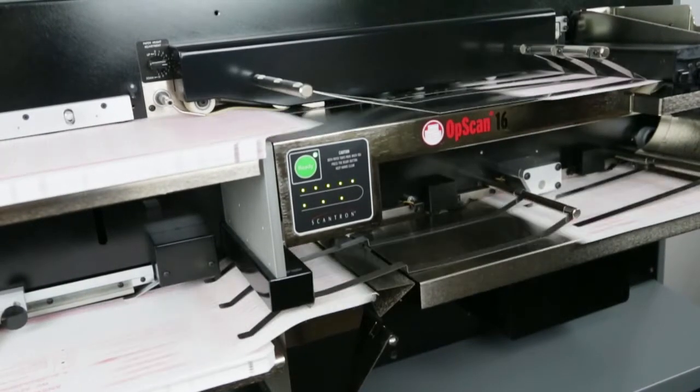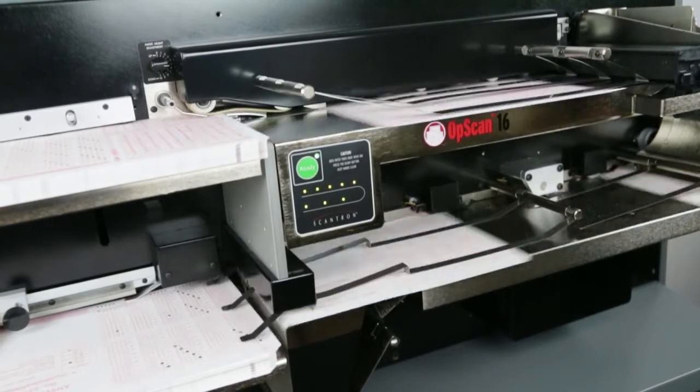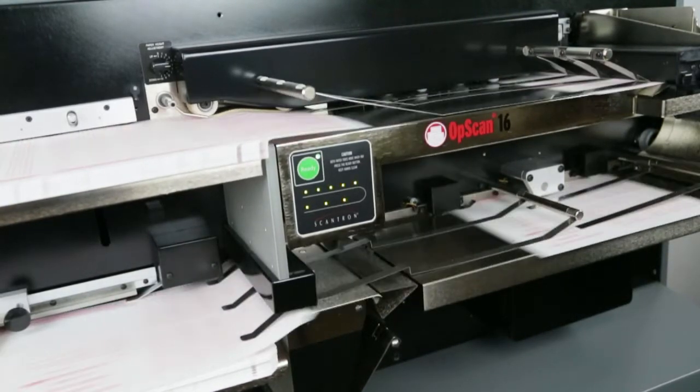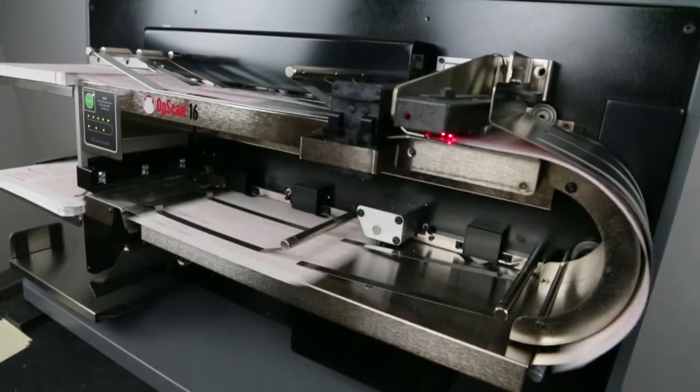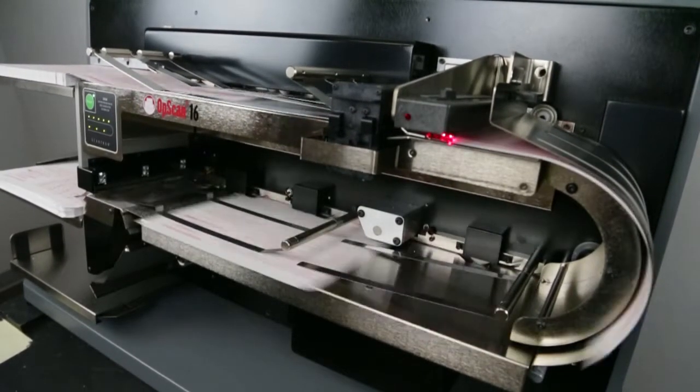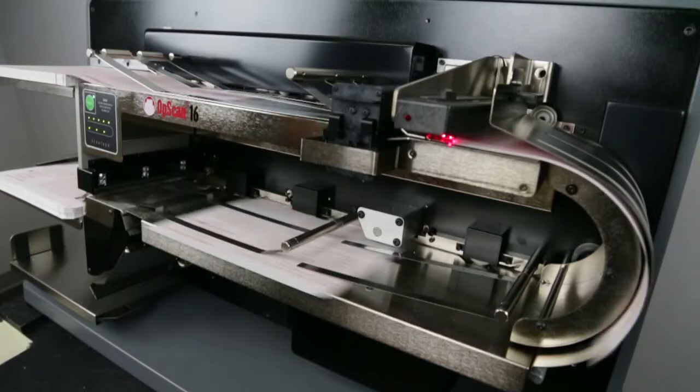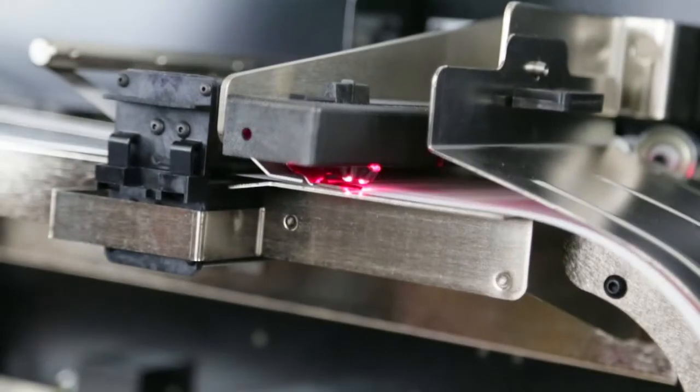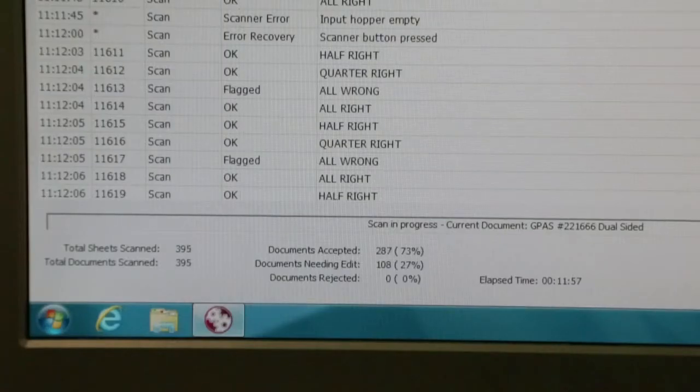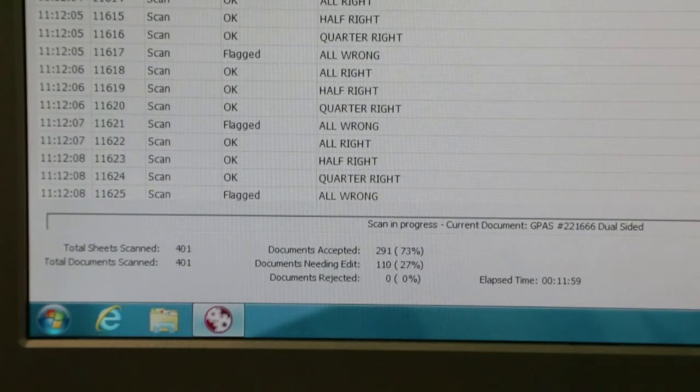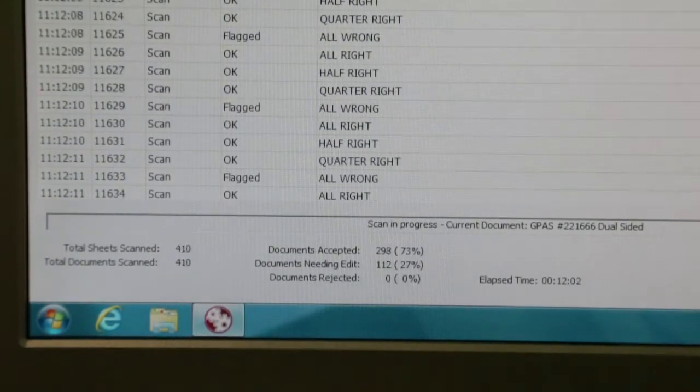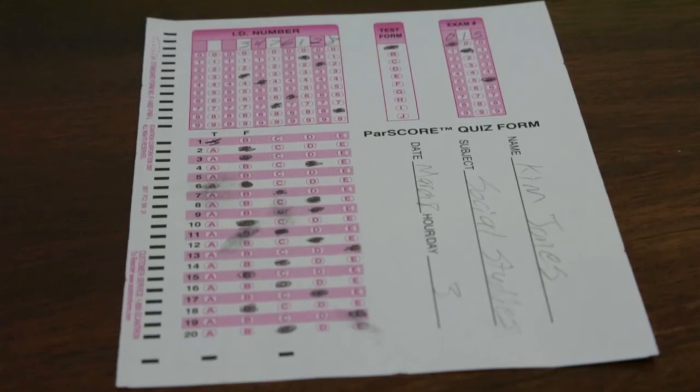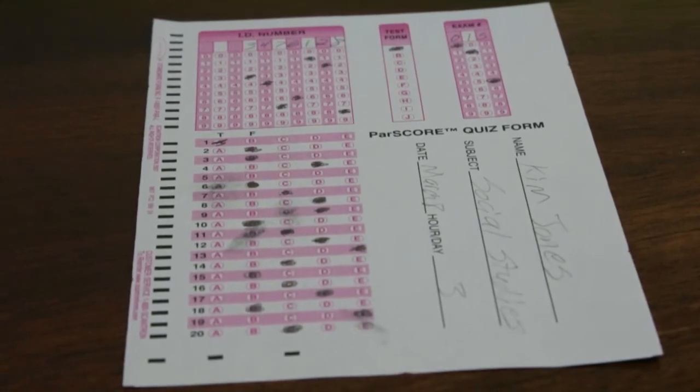High-volume scanning relies on more than continuous operation. Data reliability and accuracy are paramount. The OpScan 16 reflectively scans both sides of the sheet simultaneously, and output data is sent automatically to the computer. And because responses can be measured with 16 levels of gray, the system can easily distinguish valid marks from smudges and erasers.